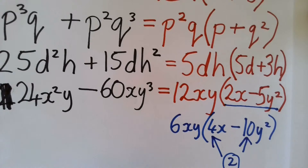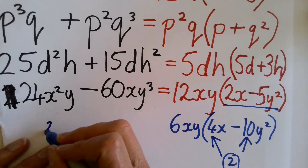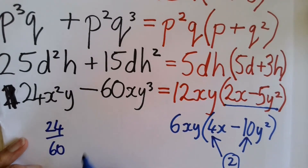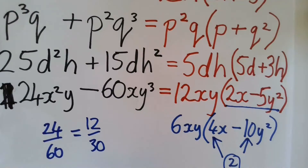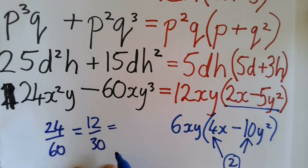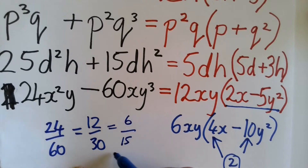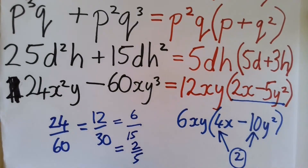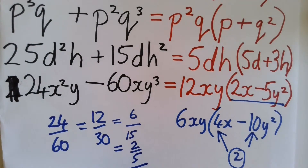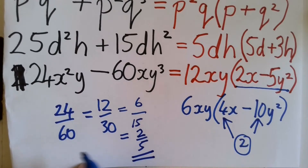It's a bit like cancelling down a fraction. If I gave you 24 over 60 and you thought, I can cancel that down — that's going to be 12 over 30. But that's not in its lowest terms. You'd have to keep going and cancel again. So when we're doing factorise completely, it's like giving a fraction in its lowest terms. This would be the only way of giving the fraction in its simplest form — as 2 fifths, not as 12 thirtieths or 6 fifteenths or 4 tenths.